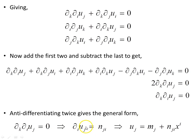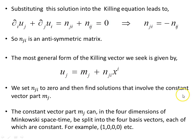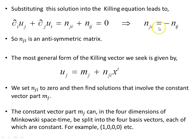Anti-differentiating twice gives a general form. Anti-differentiate once and we get this rank-2 object, this matrix. Differentiate once more and we get this vector. Substituting this general solution back into the killing equation, the constant vector m_j and the vector x_i disappear, and we are left with this matrix, which turns out to be anti-symmetric in these two indices. So our most general solution is killing vectors of this form, where the components u_j equal this full object.